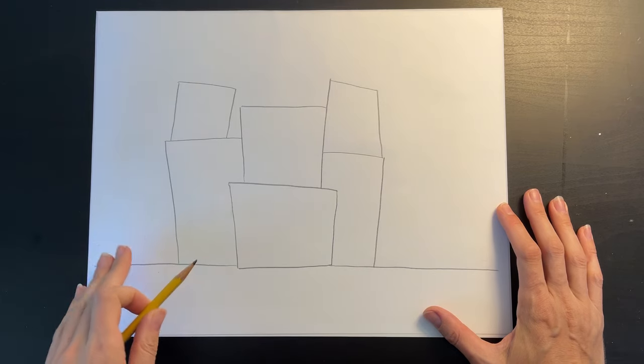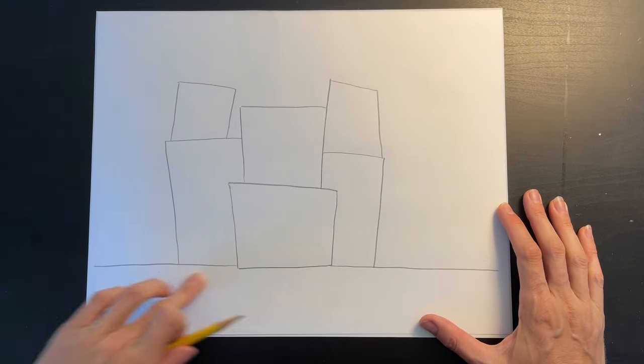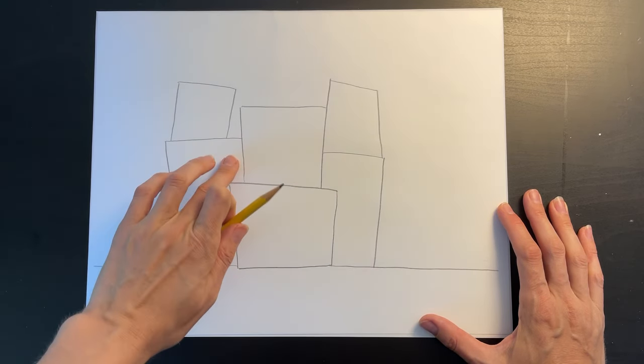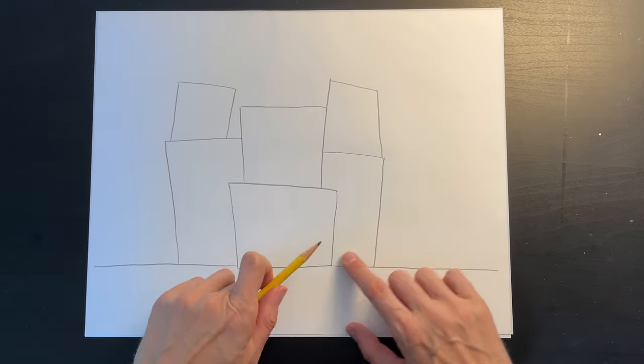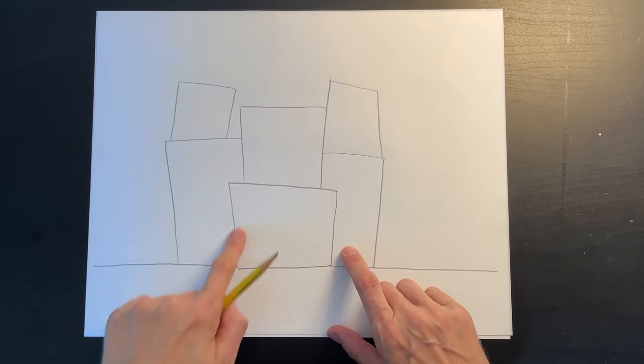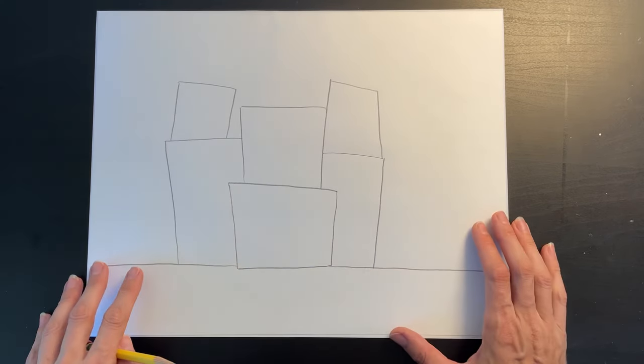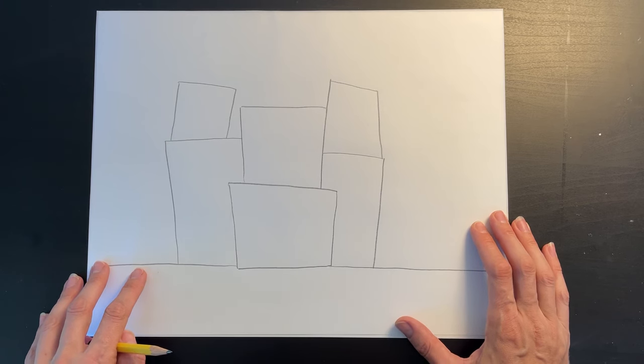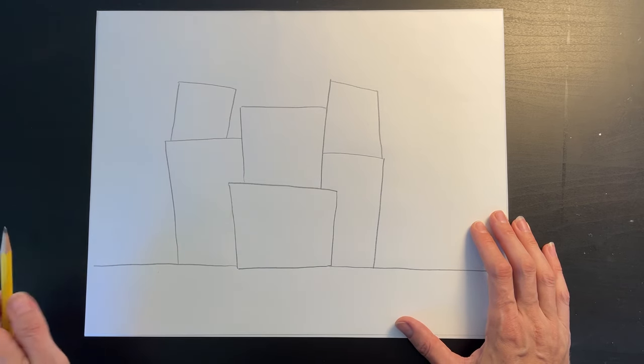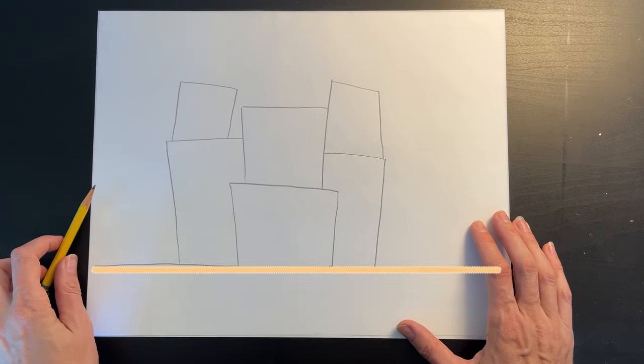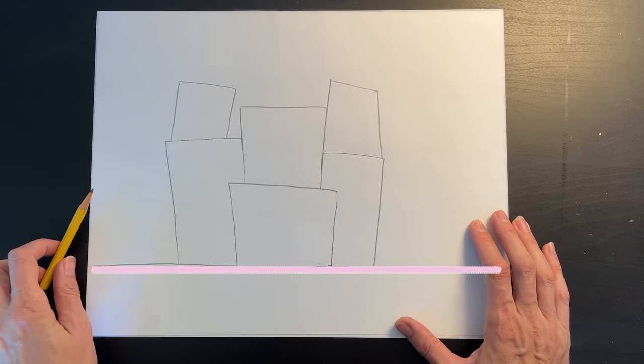You're going to want to start off today by drawing a horizon line and some rectangles stacked on top of each other. Notice how they are really crooked and wobbly. That makes your house look kind of old and dilapidated. So I'll walk you through that now. First draw a straight line a few inches from the bottom of your paper. This is called the horizon line.